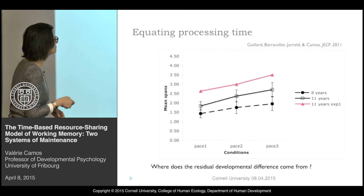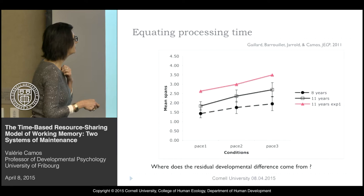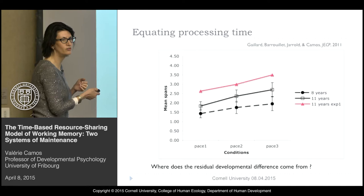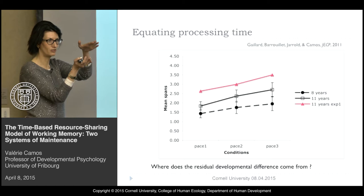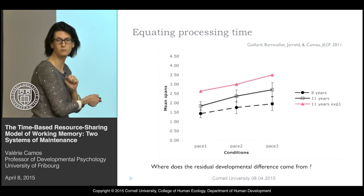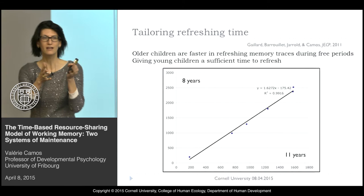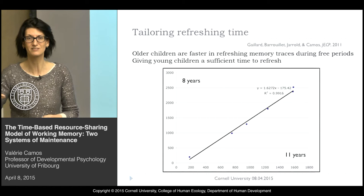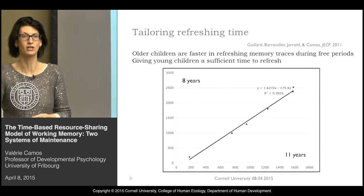For comparison: here you have the 11-year-olds from the first experiment, the 8-year-olds, and the 11-year-olds from the second experiment. You can see clearly that when 11-year-olds do a task lasting the same duration as the 8-year-olds' task, there is a reduction of the difference between the two age groups — and still a pace effect in both. There is still an age-related difference between the two. Why so? The 8-year-olds are slower, they have lower processing speed. So when they refresh, we can believe they also refresh less fast or less efficiently, or need more time to refresh the same amount of information as the 11-year-olds.